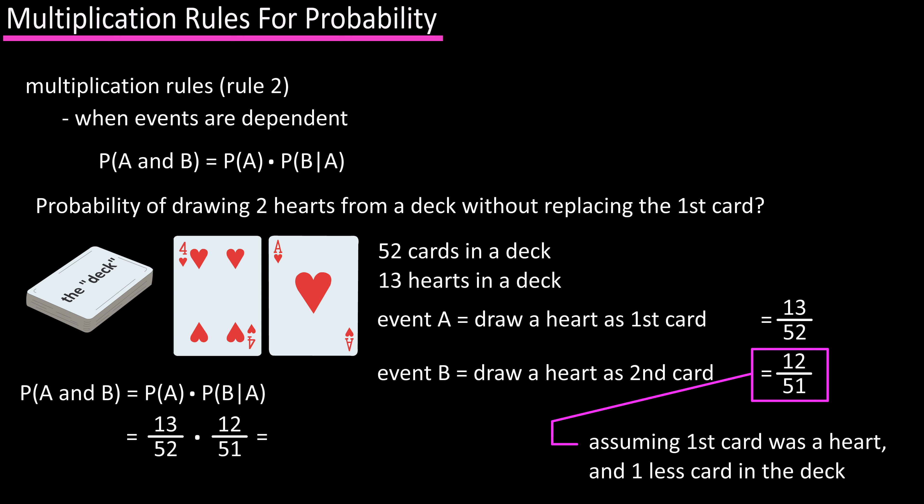It's 12/51 because we're assuming that our first draw was a heart, so there are only 12 hearts remaining, and 51 because we've removed a possible card from the deck with our first draw. So doing the math, we get 156/2652, which equals 0.059, or a 5.9% probability of drawing two hearts from a full deck.